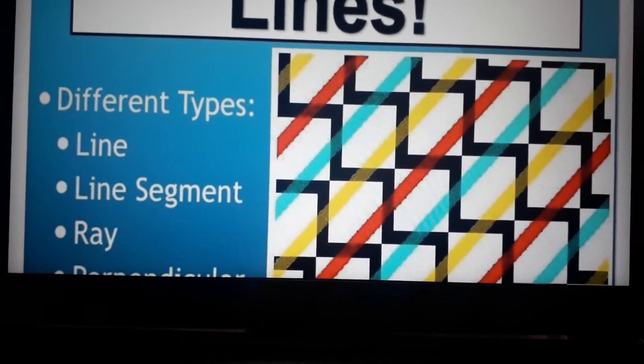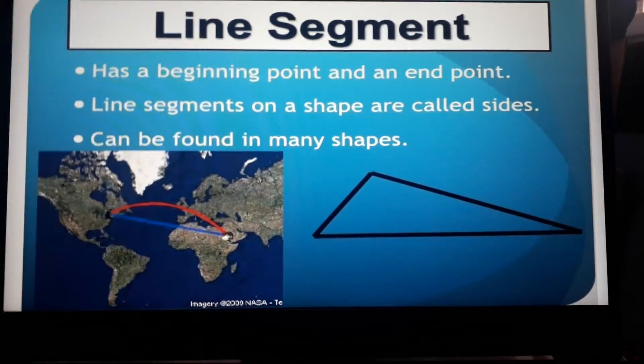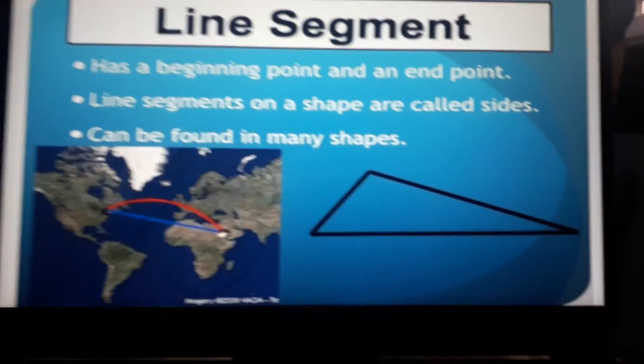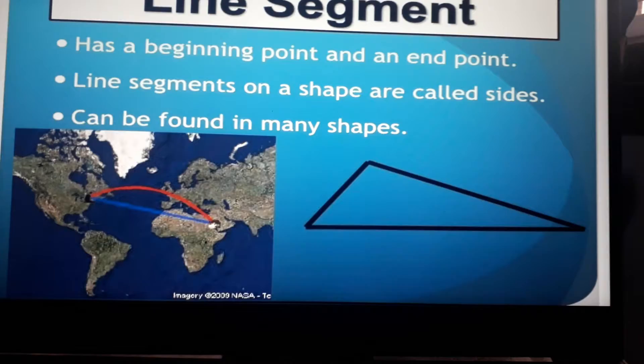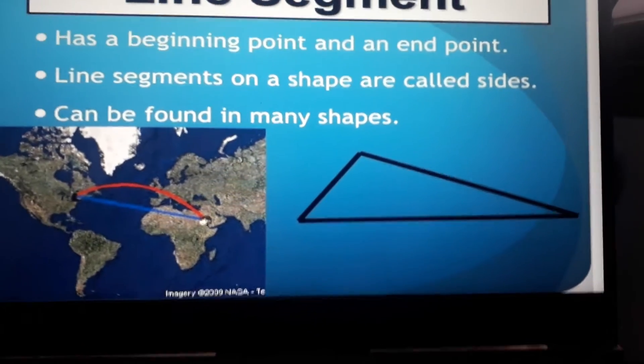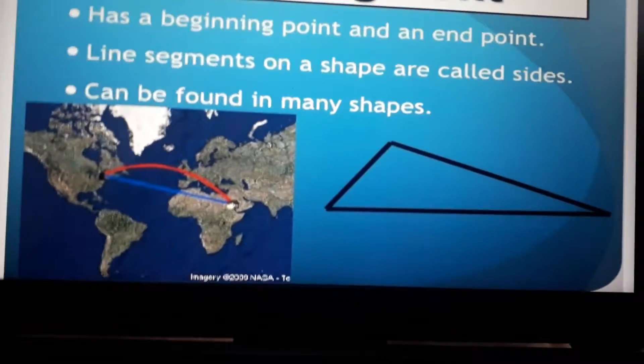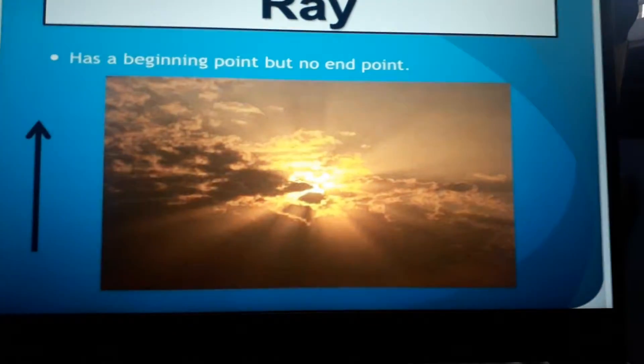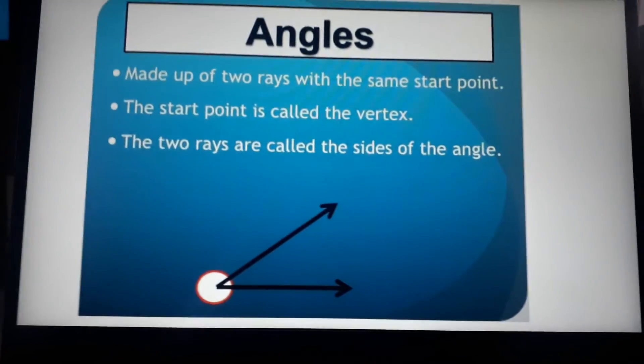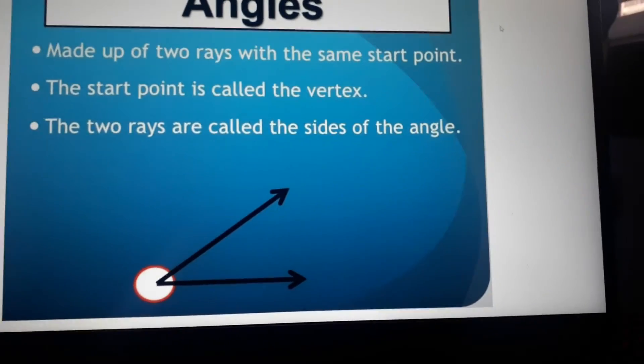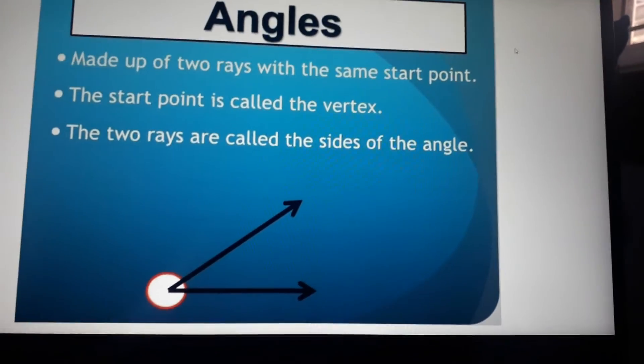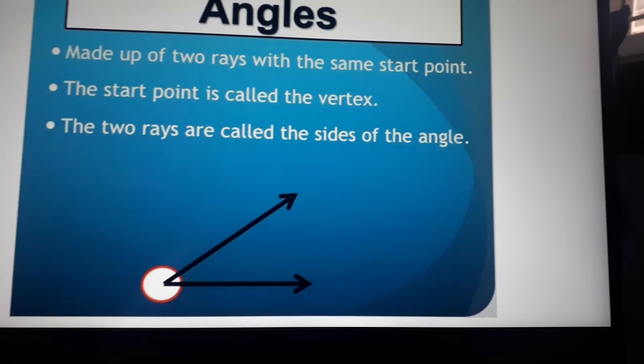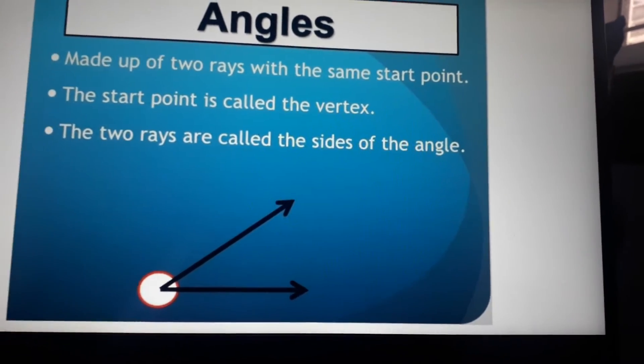A line segment has a beginning point and an end point. Line segments on shapes are called sides and can be found in many shapes. A ray has a beginning point but no end point, like the sun's rays. Angles are made up of two rays with the same start point. The start point is called the vertex, and the two rays are called the sides of angles.